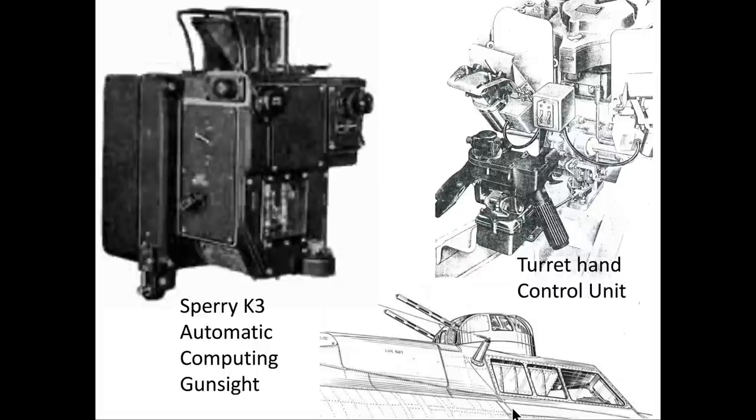The Sperry K3 automatic computing gunsight is shown in this view. The gunsight is a mechanical computer that calculates a ballistic solution for the machine gun bullets accounting for target deflection, lead, and gravity. The computer's mechanical inputs are the rate and direction of rotation, the angle and direction of elevation, and the target range.